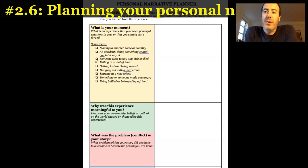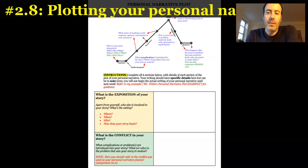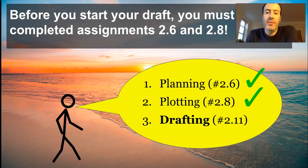So just to recap the other assignments: assignment 2.6 — you have to write down what your moment was that you're going to be writing about in as much detail as possible, why it was meaningful to you, and the problem or conflict in your story. And assignment 2.8 was where you had to plot it out according to the six plot elements: exposition, conflict, etc. So make sure you've done both of those assignments before you start on drafting your personal narrative.